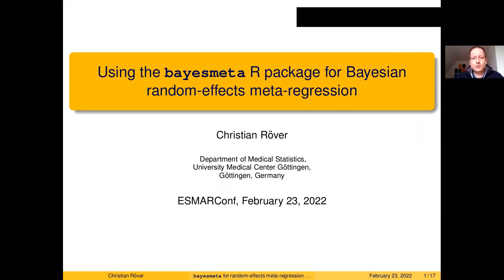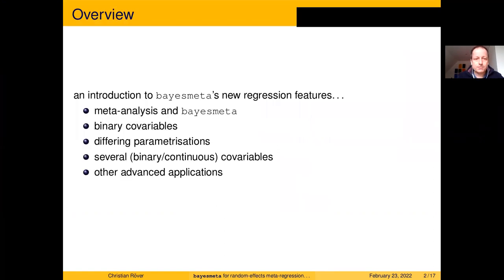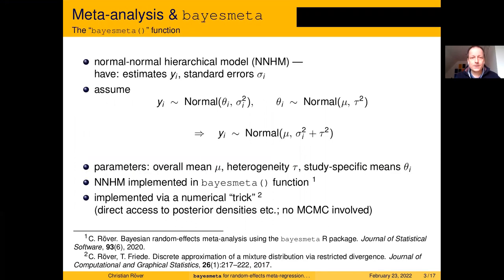Hello and welcome everyone. I'm going to give a brief introduction into the new meta-regression features now implemented in the base meta R package. I'll first say a few words about simple meta-analysis and the base meta package, then go to the case of co-variables available at the study level. I'll briefly talk about different parameterizations, binary and continuous co-variables, some more advanced applications, and close with conclusions.